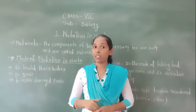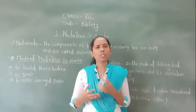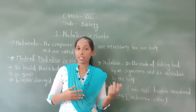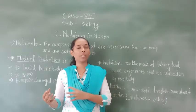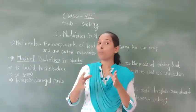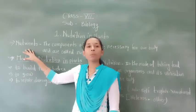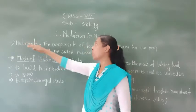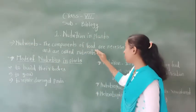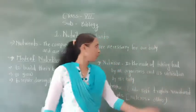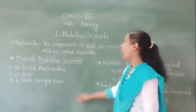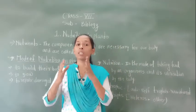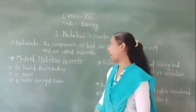In 6th standard you discussed about the components of food. What are the components of food? Carbohydrates, proteins, fats, vitamins — all these are the different components of food. All these components of food are called nutrients. Nutrients means the components of food that are necessary for our body.